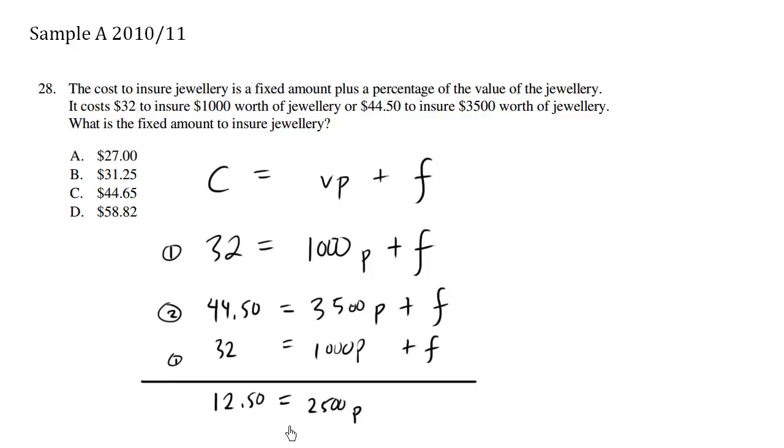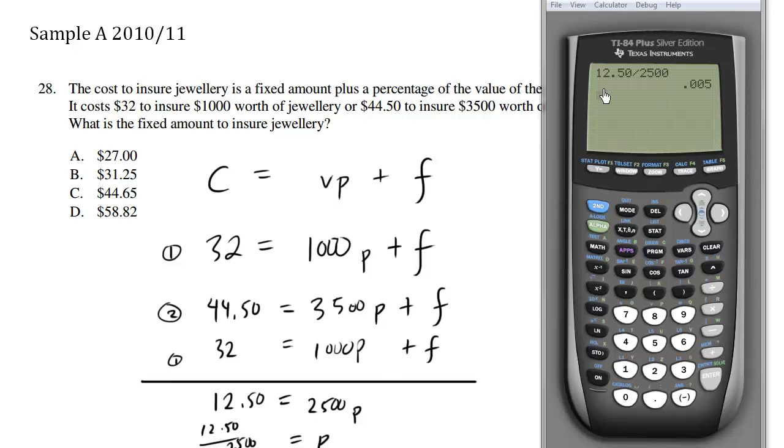We can solve for P by dividing both sides by 2500. So P equals 1250 divided by 2500, which is 0.005. So P equals 0.005.